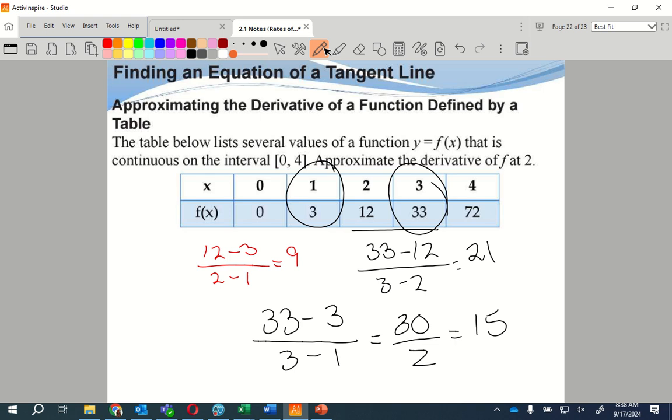If you notice, going from 1 to 2, it's 9. Going from 2 to 3, it's 21. So my slope should be going up, right? It should be somewhere between those two things. By approximating the secant line using my two points on either side, my slope should be 15 in between the two points.